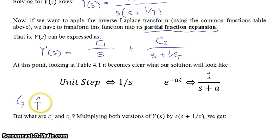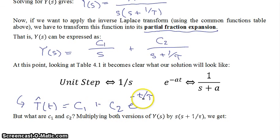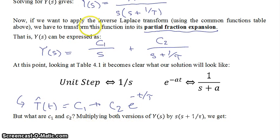Once we do that, our function in the time domain will be: T-hat as a function of time equals C1 plus C2 times e to the minus t over tau. The question is: what are C1 and C2? We take the Y(s) expression, multiply through by the full denominator on both sides.